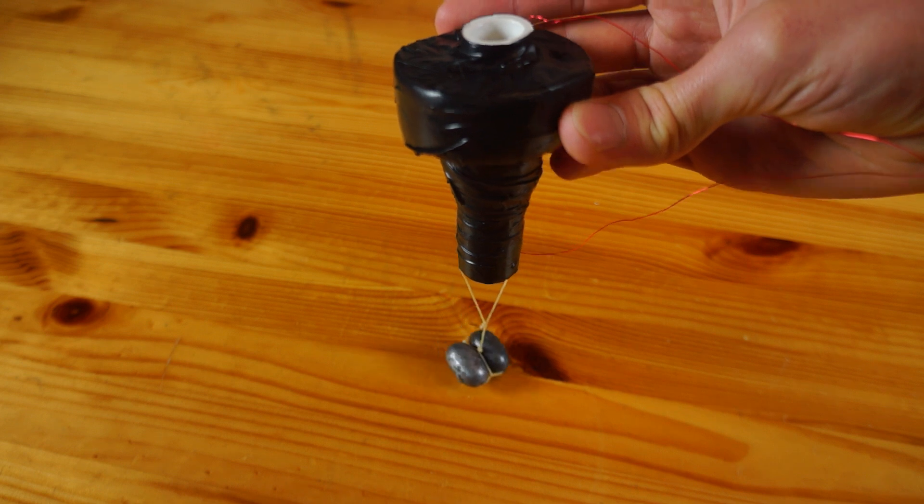When the magnet passes through this coil of wire, electricity is created. Finally, there are weights to anchor the bottom part to the ground.